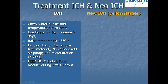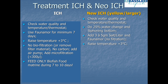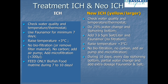For the treatment of new ick, which is different in color and appearance: check the water quality and temperature. Do a 25% water change and siphon the bottom. Add salt at 3 to 5 grams per liter. Use correct medications and raise the temperature by 3 degrees. Do not use biofiltration or carbon filtration. Add an air pump and use microfiltration when possible. During the next 10 days, every day try to siphon the bottom and do a partial water change, adding extra dosage of medication and salt.